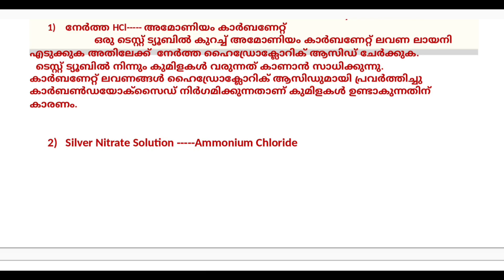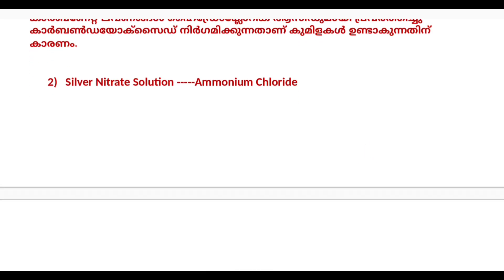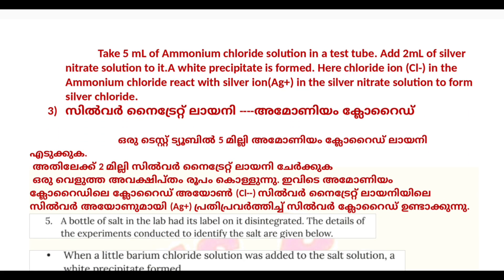This is a silver nitrate solution. We will use it to identify ammonium chloride. Take 5 mL of ammonium chloride solution and add 2 mL of silver nitrate solution to it. A white precipitate is formed.